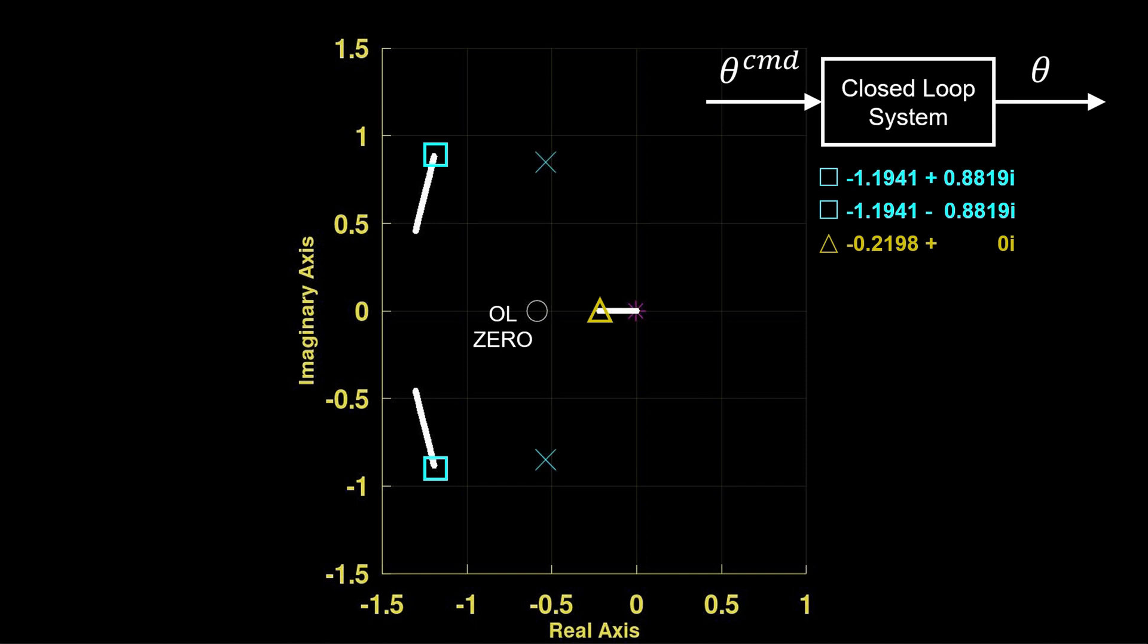These are the eigenvalues of the slow closed loop pitch response. Regardless of control effort, the open loop zero limits the pitch eigenvalue, which is dominant.